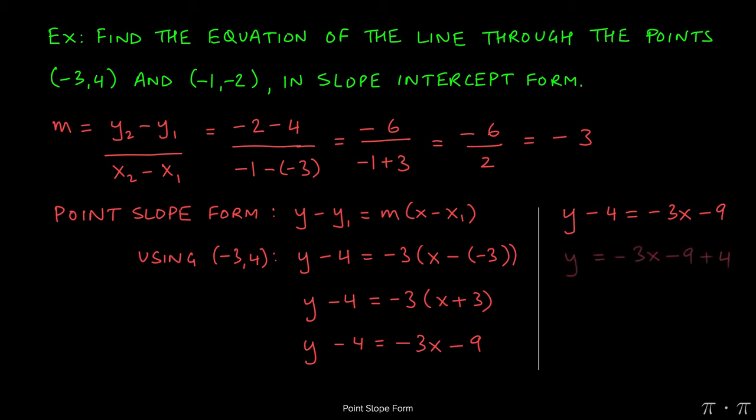So if we do that, we get y equals -3x minus 9 plus 4. Negative 9 plus 4 simplifies to -5. That is the equation of the line that passes through the two given points, but instead of being in point-slope form, it is in slope-intercept form.